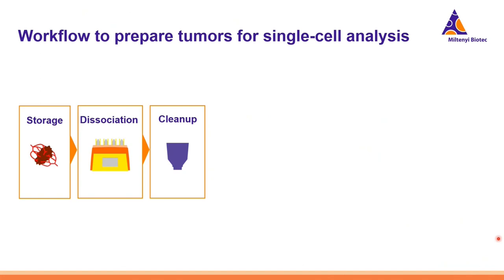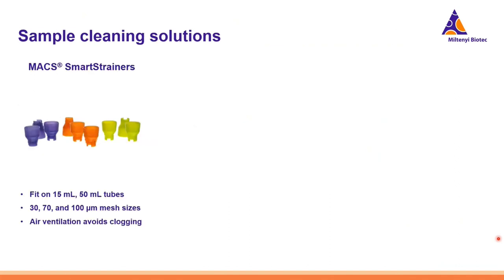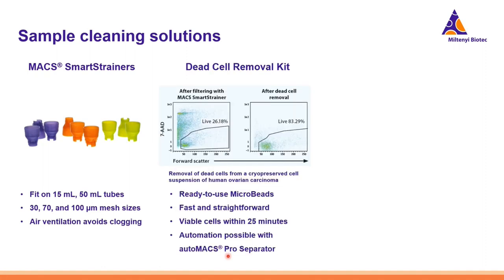Once we have our tumor cell suspension, it might not be super clean, and there may be some dead cells or debris that we need to clean up in order to run the single cell analysis. First, it's important to properly filter the sample, and here we can use our MACSmart Strainers that come in different mesh sizes. The benefit of these strainers is that they fit in both 15 and 50 ml tubes and have a special design to allow better air ventilation and avoid clogging. Sometimes the amount of dead cells present in the tumor cell suspension is a problem to run the genomic analysis, and for this we provide a Dead Cell Removal Kit, which is a ready-to-use microbead solution allowing fast and straightforward depletion of dead cells in less than half an hour.